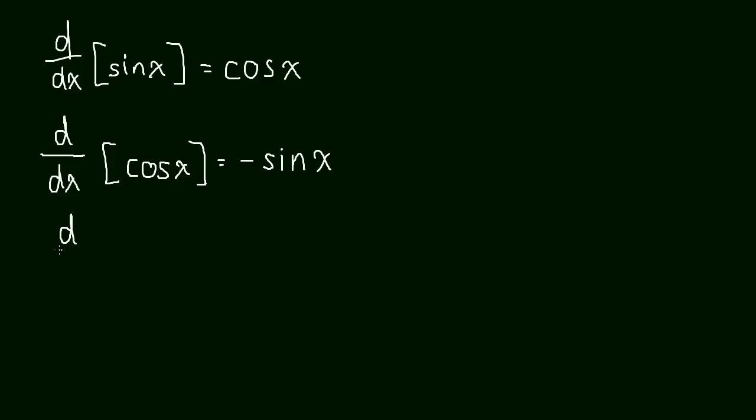And then the derivative of tangent, derivative with respect to x, of tangent x is equal to secant squared x. And secant, remember, is just 1 over cosine. Okay, so those are those ones.